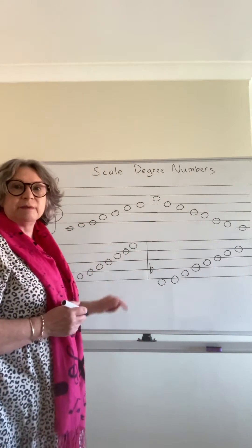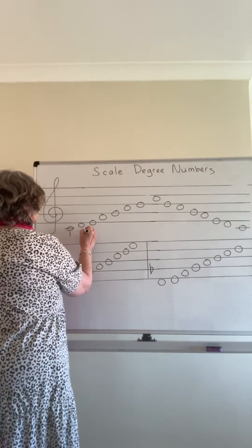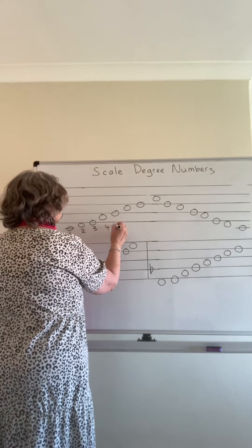If you're in C major, it's just numbering the notes one to eight. If you're in G major, of course G will be one. And in F major, F is one. All fairly straightforward so far. Sometimes you're asked to write a scale descending and to put the scale degree numbers — you're actually going to count backwards.